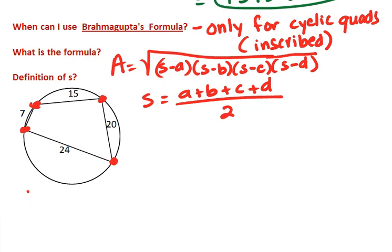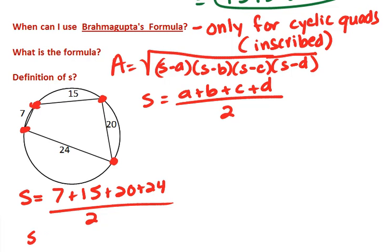So pretty obvious here. Let's do this problem. Again, if you want to stop and then restart the video. So our perimeter, if we add this up, 7 and 15, 22 plus 20 is 42, plus 24 is 66. So it looks like our semi-perimeter is 33.